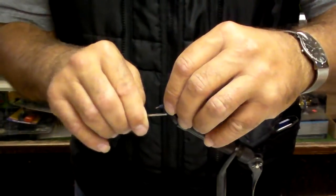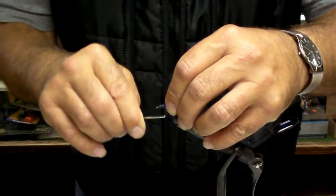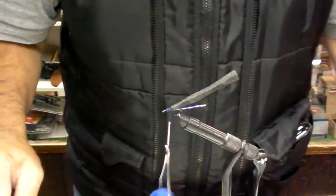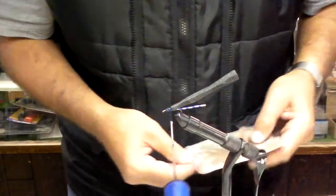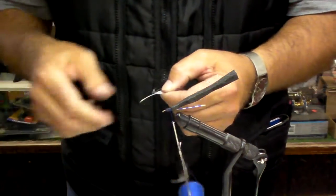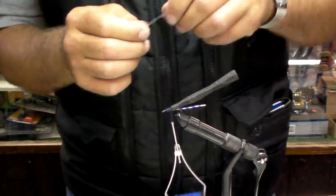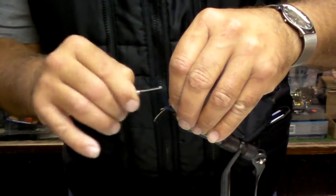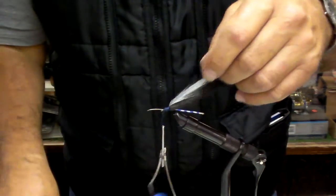The hackle I've got here is some blue dun. I'm going to strip off the parts that I don't use and bring that up to the fly, and then we're going to trim off the excess.